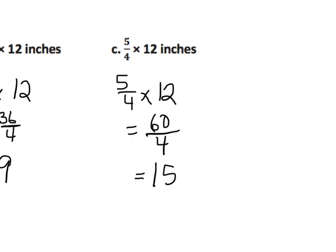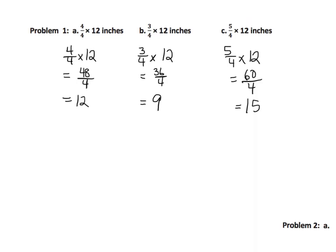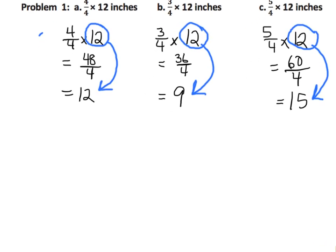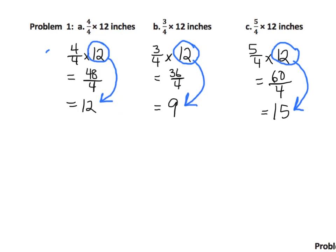Now let's take a step back and look at what transpired. In all three cases, we multiplied by 12. In the first case, the 12 stayed the same. In the second case, the 12 got smaller. And in the third case, the 12 got bigger.